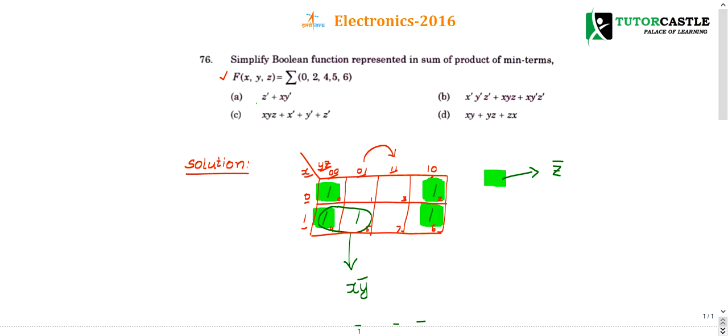Okay, so 1, 1, 0, 0. Then inside I have written 0, 1. This is 2, this is 3, this is 4, 5, this is 6, this is 7.